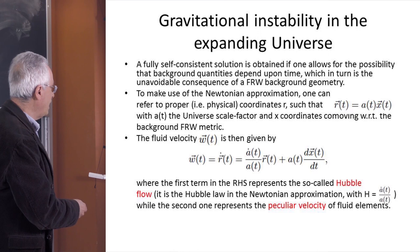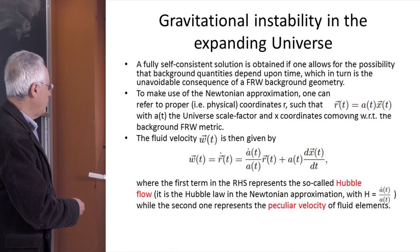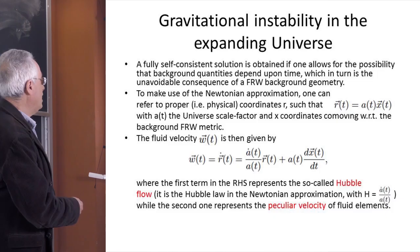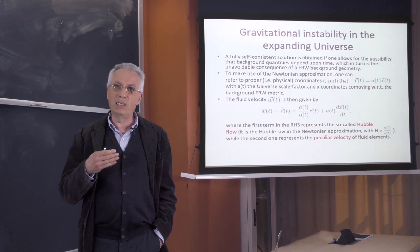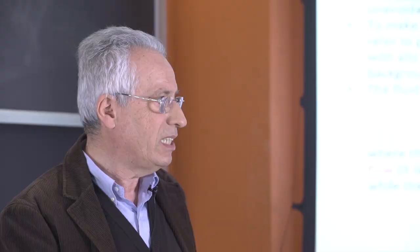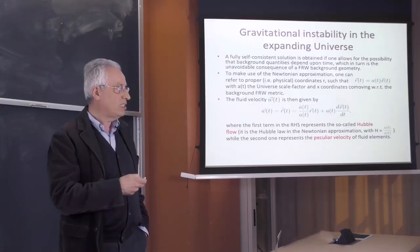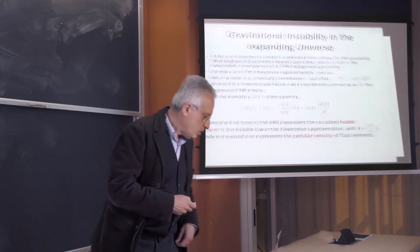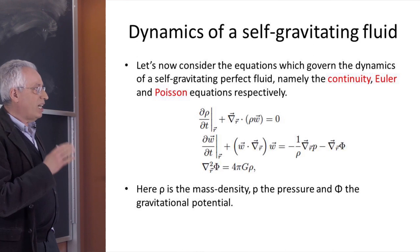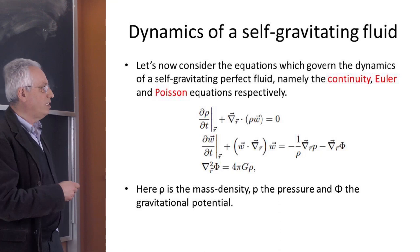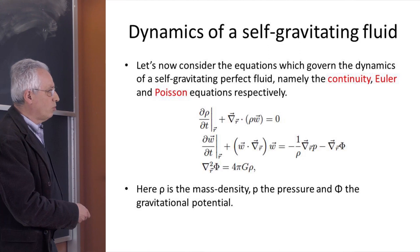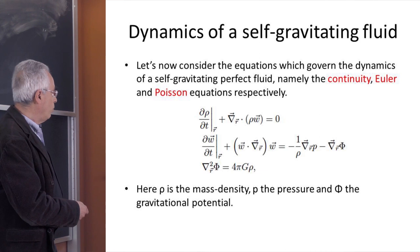The peculiar velocity is the excess velocity that a fluid element or galaxy has with respect to the overall expansion of the universe. With these coordinates, we can write the standard Newtonian equations for a self-gravitating fluid: the continuity equation (mass conservation), the Euler equation (momentum conservation), and the Poisson equation connecting the gravitational potential with the local mass density. Here rho is the mass density, p the pressure, and phi the gravitational potential.